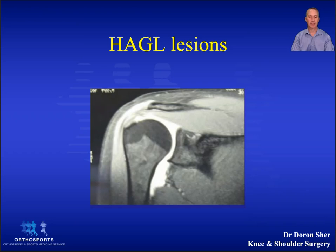It seems to be associated with traction rather than collision and can sometimes have pain as well as instability sensations. On this MRI you can see that the capsule is not attached to the neck of the humerus as it should be.